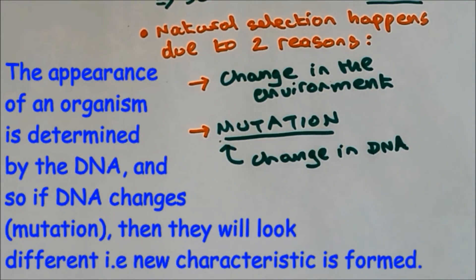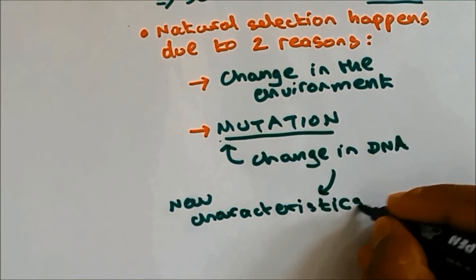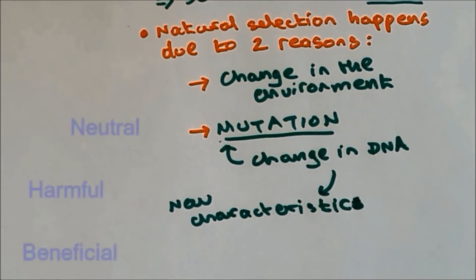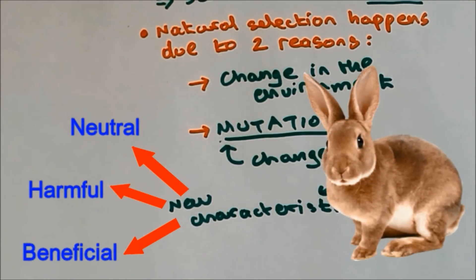This new characteristics can be neutral, beneficial or harmful. If it's neutral, then it's not helping with the survival. If it's beneficial, then it's helping with the survival. An example of such mutation would be a rabbit having bigger ears. So it will be able to hear from long distance and escape from its predator.